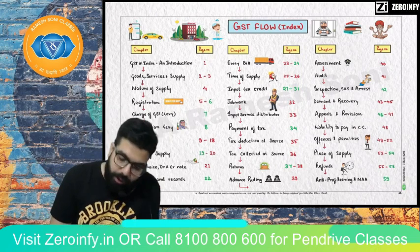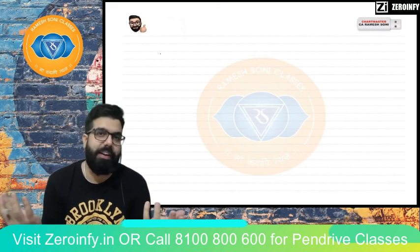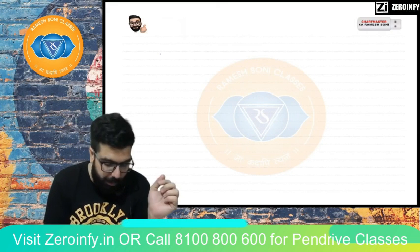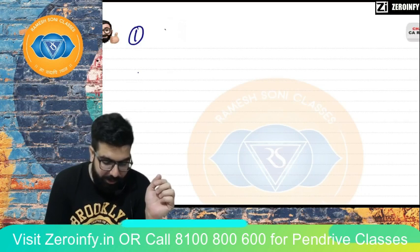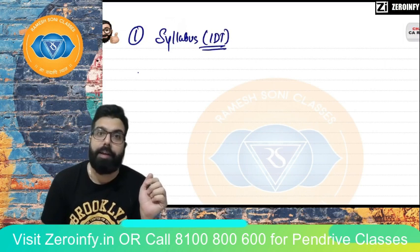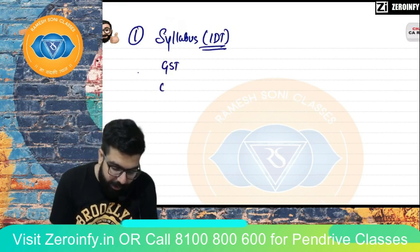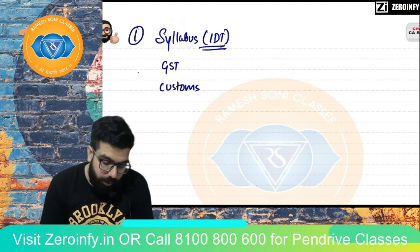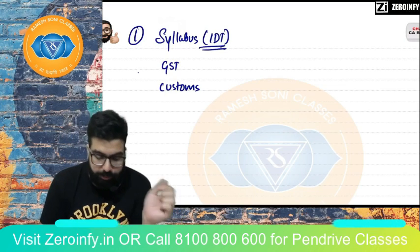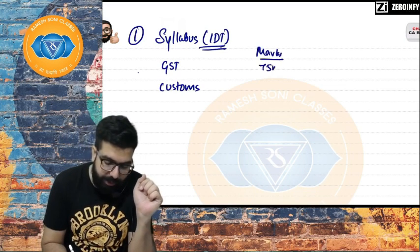First, let's cover some small things we generally discuss at the beginning of class. Number one: syllabus. What will the syllabus be for Indirect Tax? I am going to teach you Indirect Tax, and the syllabus covers GST and Customs. GST comes for 75 marks in the exam.